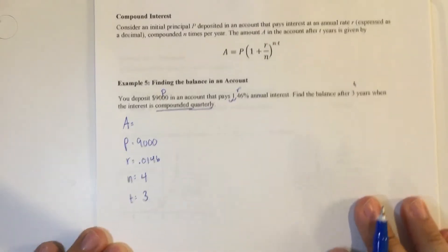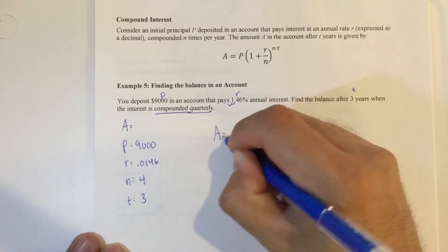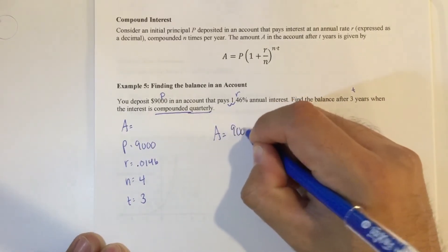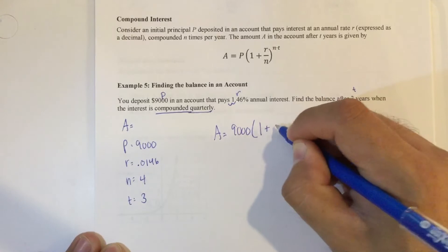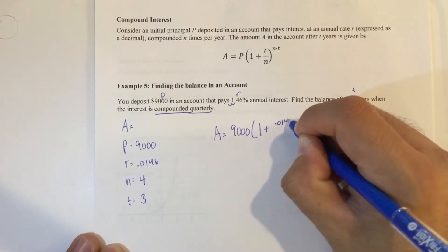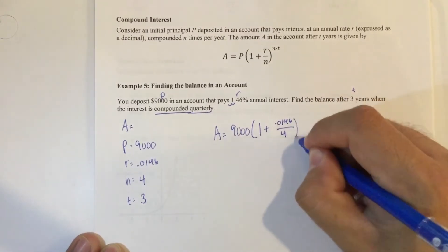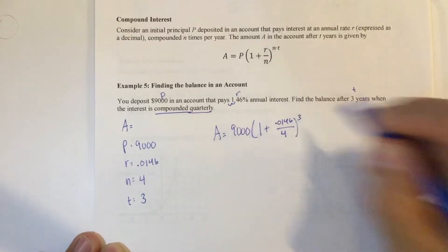Let's plug into the formula. You can see the formula up here. So A equals principal, which is 9,000. One plus R, which is 0.0146, over N, which is four, raised to the T power, which is three.